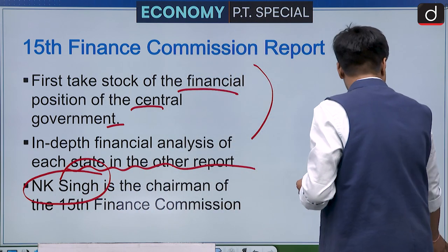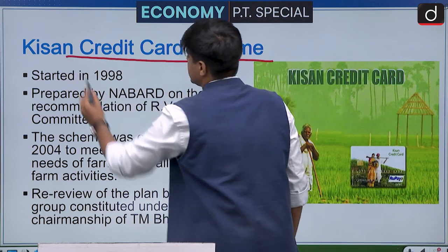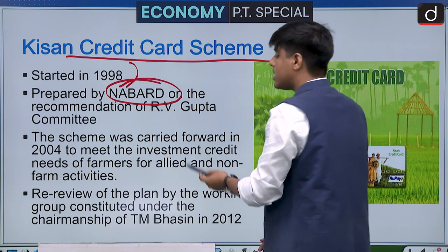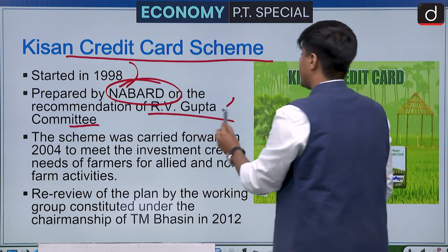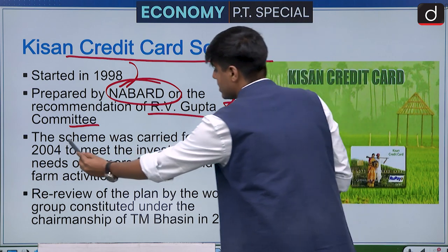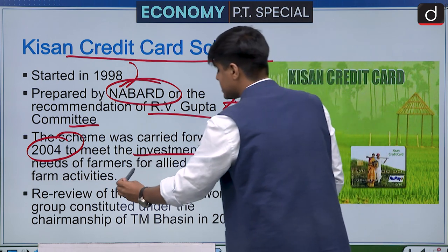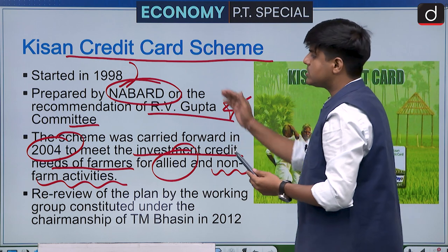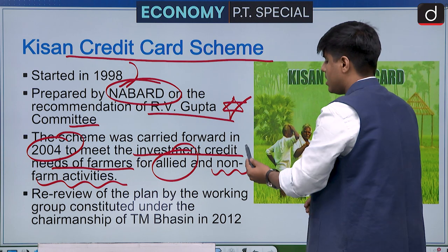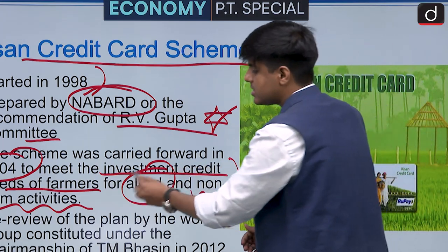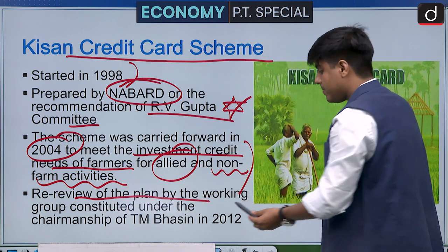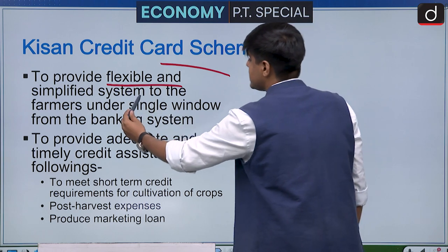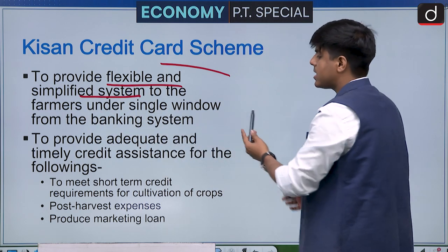Kisan Credit Card Scheme was in news. It is an old scheme, started in 1998, prepared by NABARD on the recommendations of the R.V. Gupta Committee. The scheme was carried forward in 2004 to meet investment credit needs of farmers for allied and non-farm activities. A review of the plan was done by a committee under T.M. Bhasin in 2012.